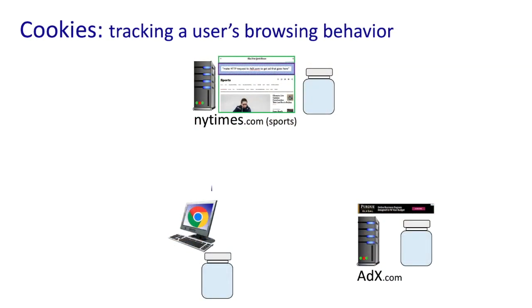We've just seen an example of how multiple websites are contacted by your browser, even when your browser wants to display just a single page. Now let's see how cookies might be used here. Each of the cookie jars are initially empty — in your browser and in the websites you're going to visit. Cookies aren't involved yet since my browser's cookie jar is empty.